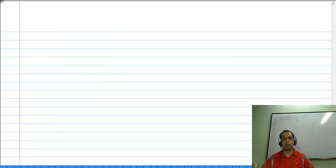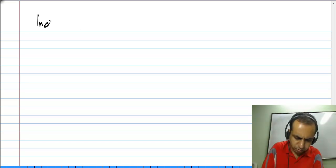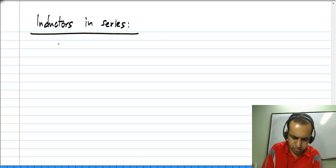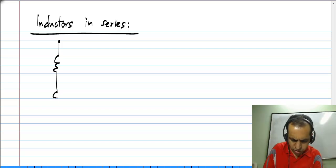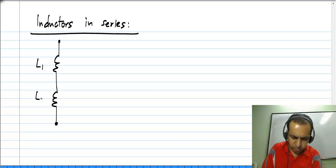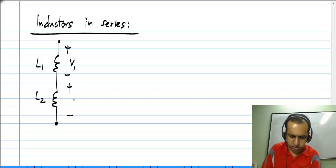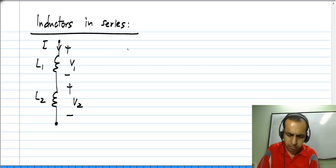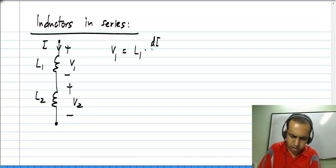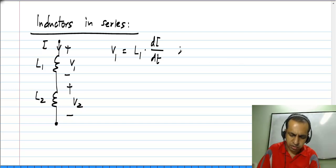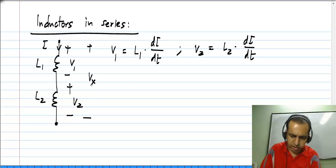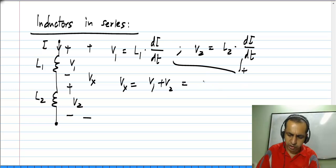Next, we will look at inductors in series. Let me start with two inductors L1 and L2 and mark the individual voltages V1 and V2 and the current through the series combination, which is I. We know that V1 is L1 times the time derivative of I, and V2 is L2 times the time derivative of I. The total voltage Vx is V1 plus V2, which is L1 plus L2 times the time derivative of I.